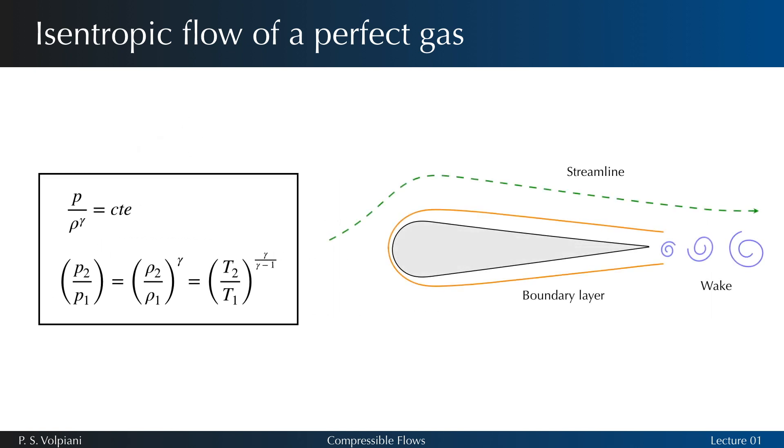These relations are valid in an isentropic compressible flow. For example, consider the flow around an airfoil without discontinuities, shock for instance, and outside the boundary layer and wake zones. Imagine a fluid element moving along one of the streamlines. There is no heat being added or taken away from this fluid element. Thus, the flow of the fluid element along the streamline is adiabatic. In this region, friction can also be neglected. Hence, the flow of the fluid element is both adiabatic and reversible. That means the flow is isentropic.